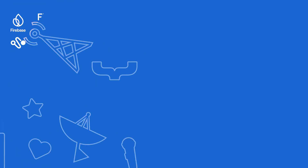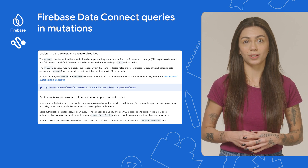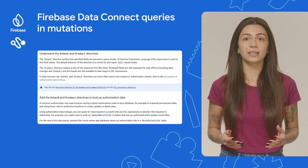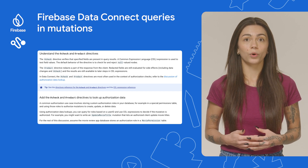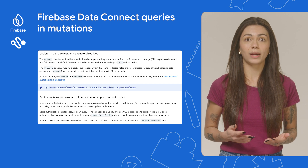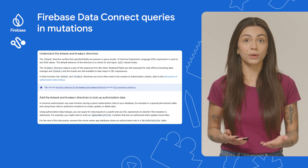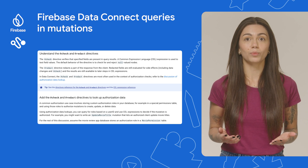If you want to check these releases in more detail, take a look at the Firebase Release Notes page. These and all the other links mentioned in this episode are available in the description below. We also have one last topic today: Firebase Data Connect queries in mutations. We've released version 13.25 of the Firebase CLI, which includes support for writing queries in mutations and introduces a check directive for advanced authorization, such as storing custom authorization roles in your database. Check out the documentation to learn more.